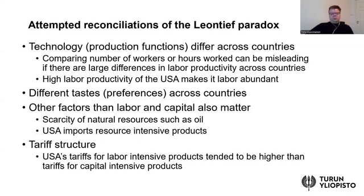A third line of explanation relates to the fact that the Heckscher-Ohlin model takes into account only labor and capital as two factors of production, but we have also other inputs to production, for example energy. There are scarce factors such as energy sources — for example, oil resources are scarce. Indeed, if we take into account also energy and natural resources, then empirically we can see that the USA is importing more resource intensive products.